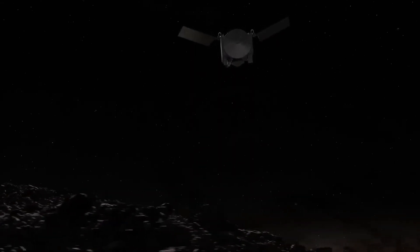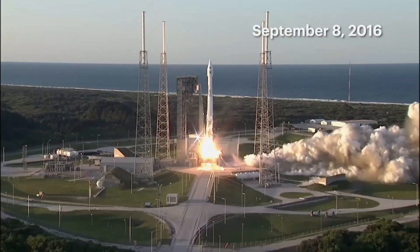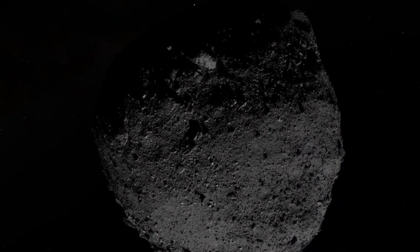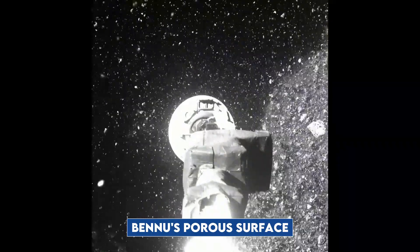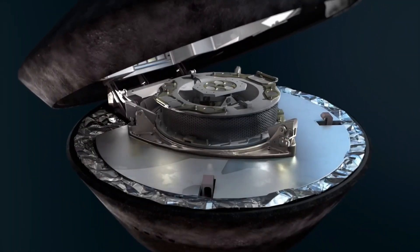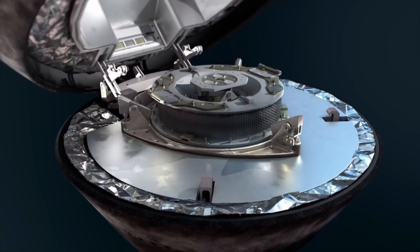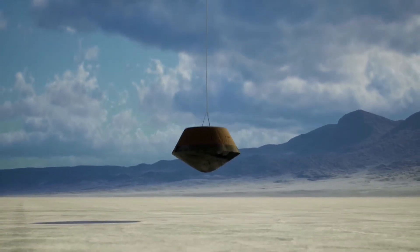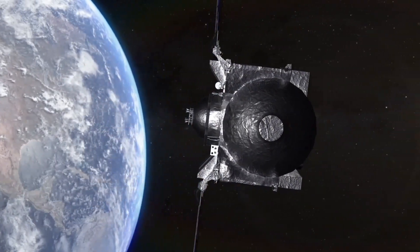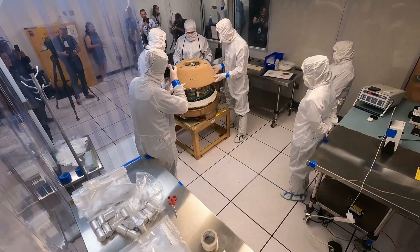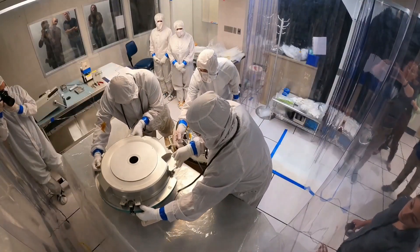OSIRIS-REx's journey began in 2016 and reached its climax in 2020 when it plunged into Bennu's porous surface. Even though some of the material escaped into space, a substantial amount was secured in the return capsule, which finally landed in the Utah desert in 2021. Once arriving to the laboratory, the process is quite complex.